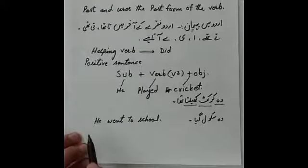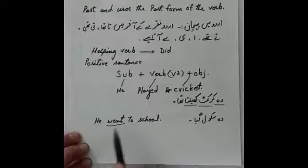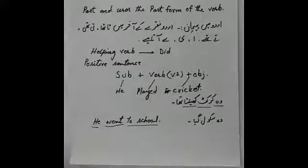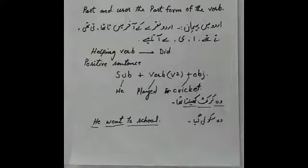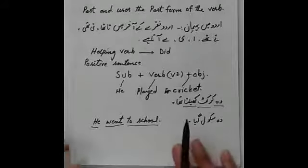اگلی مثال: وہ سکول گیا — 'وہ' subject ہے۔ جانا کی انگلش go ہے اور go کی second form went ہے، تو: He went to school۔ Went آپ کا second form of verb ہے، he آپ کا subject ہے اور school آپ کا object ہے۔ تو positive sentence کا فارمولا یاد رکھیں: Subject + second form of verb + object — اس میں helping verb کا استعمال نہیں کریں گے۔